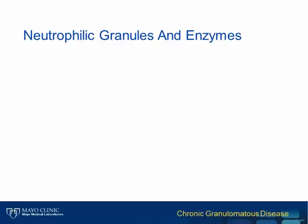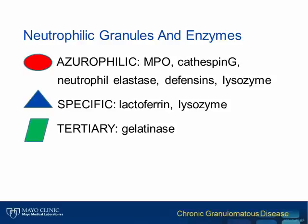Some of the key neutrophil granule proteins involved in the neutrophil immune response are listed here. They include the azurophilic granules, which contain myeloperoxidase and cathepsin G, neutrophil elastase, defensins, and lysozyme. There are specific granules that contain lactoferrin and lysozyme, and tertiary granules that contain gelatinase.